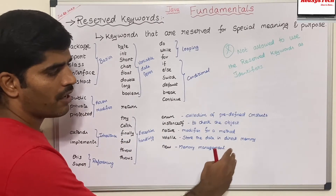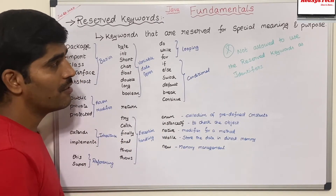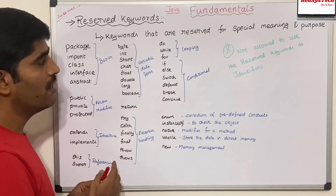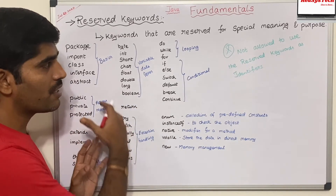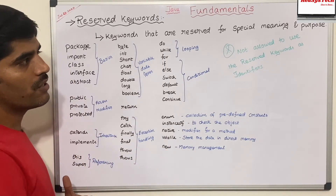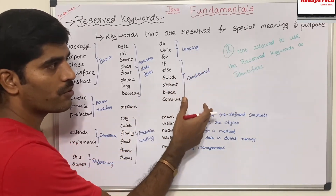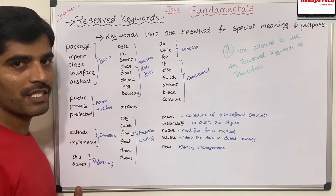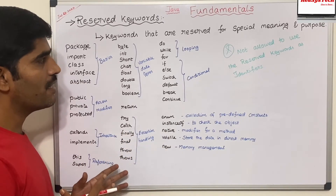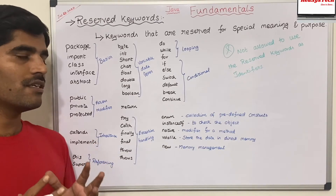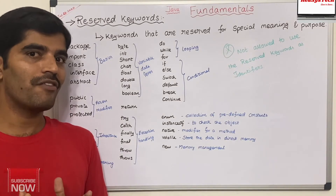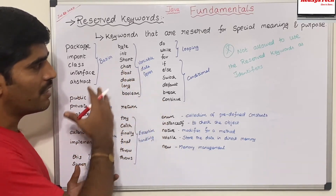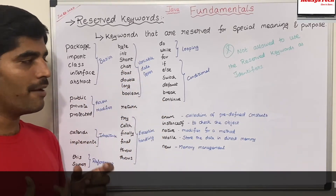There are some more keywords available in Java, but these are the high-level ones we use in daily development. We should not use these reserved keywords for our own purposes — such as identifier names — because they have their own specific purpose and meaning in the Java language.